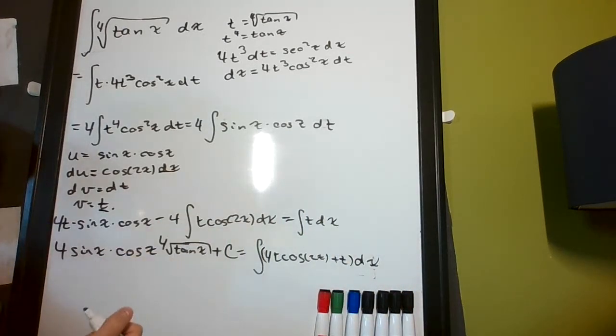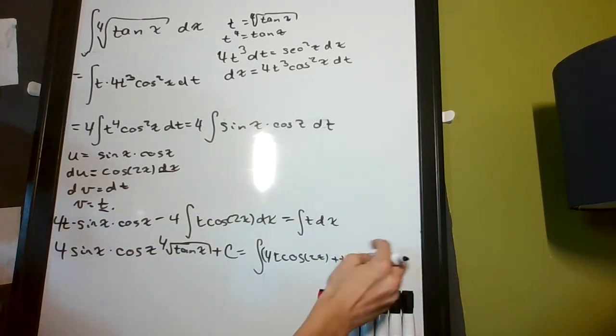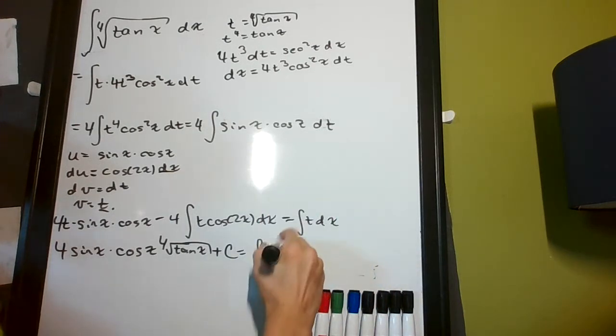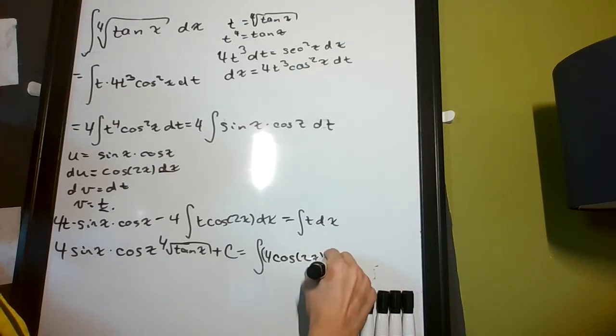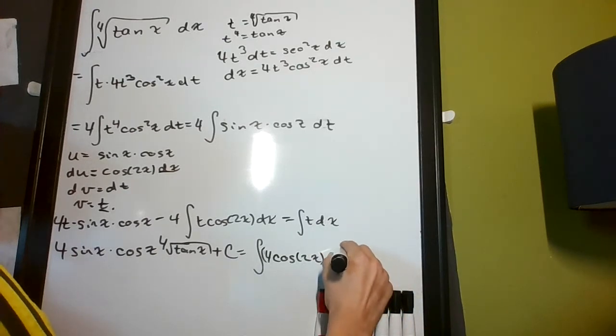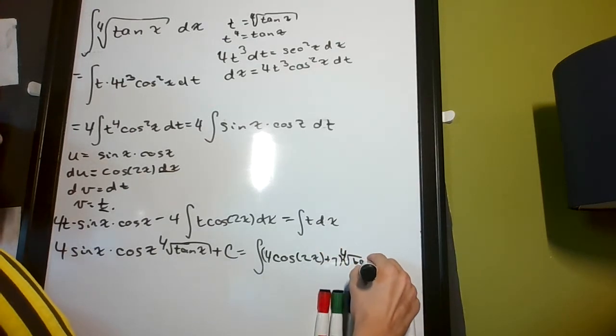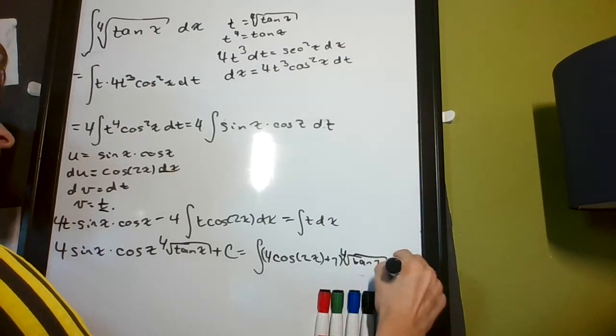But, guess what? I can factor out a t there, and I get 4 cosine 2x plus 1 times plug in for t 4th root of tangent x dx.